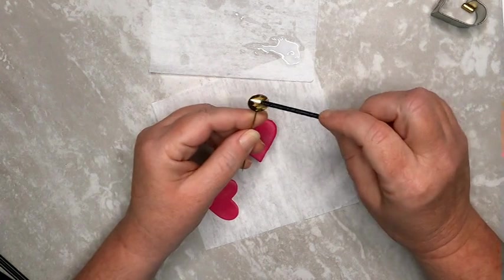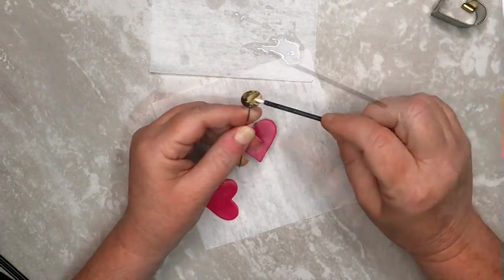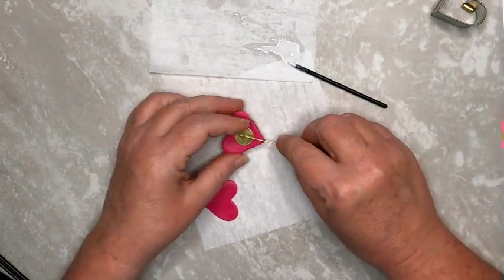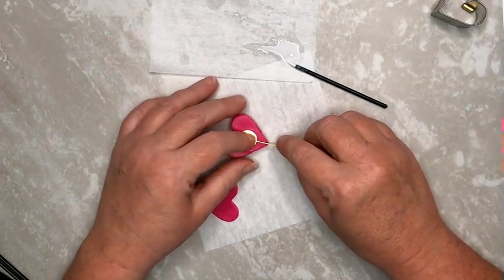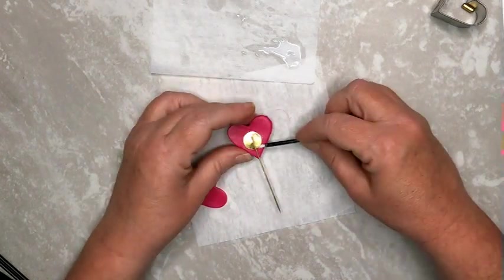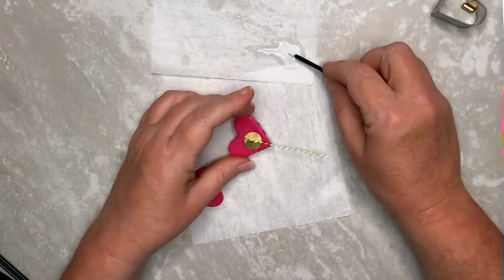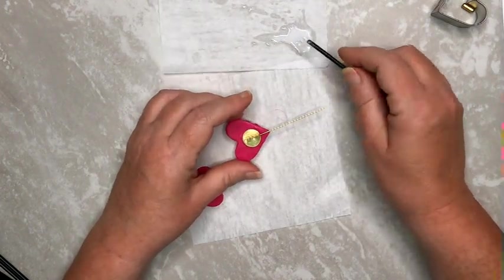Apply some liquid clay to the pin back finding. Then firmly press it into the raw fuchsia clay. Then apply more liquid clay to the pin back.